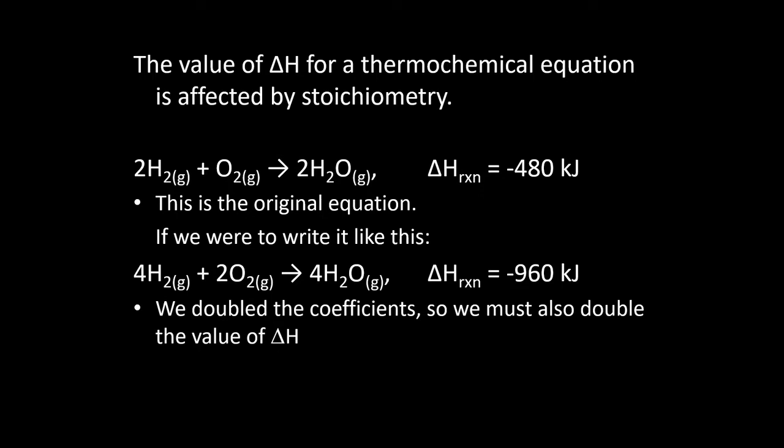When we're talking about the enthalpy change of a reaction, enthalpy is extensive — more specifically, enthalpy is directly proportional in how it changes. So if we double the amount of stuff that's reacting, we get double the enthalpy change. In this case, because we started with 480 kilojoules being released, when we double that, it becomes 960.